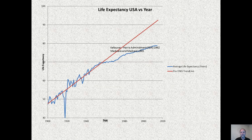This graph shows the trend line for the increase in life expectancy from 1900 to today and the actual increase in life expectancy. Note that the increase in life expectancy trended up at a much quicker rate before the 1960s. Since then, it has gone down significantly. So if the trend from the early half of the 20th century had continued, the average lifespan of Americans would be in the 90s, whereas today it is below 80.